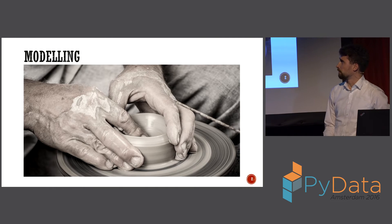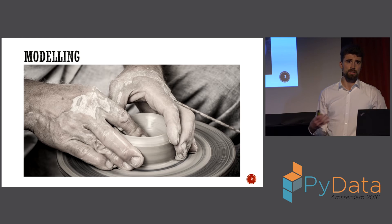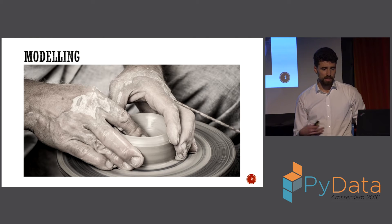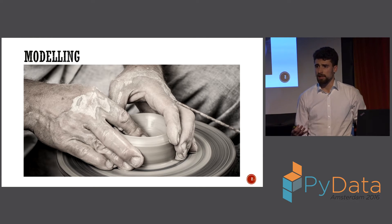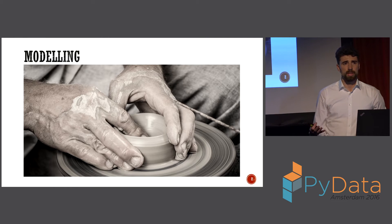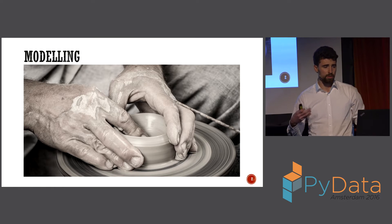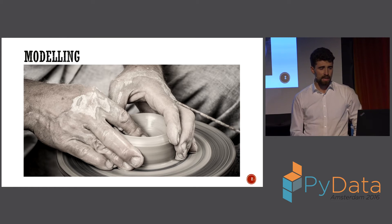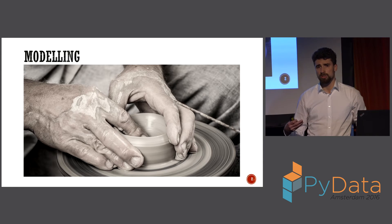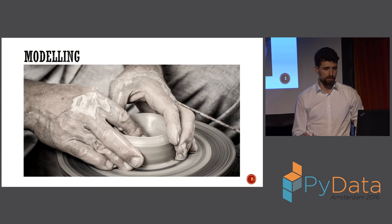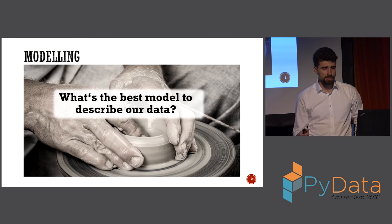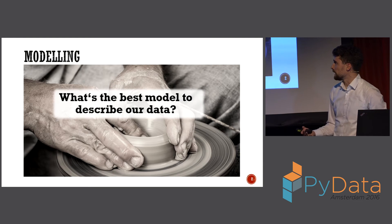A huge part of the work of a data scientist is actually modeling. Some customer, or depending on some project, we get some data, and the data always stands for the observations we have of some complex real-world system or process, and we always want to use the data to find some good model for it. So what we ask ourselves: what's the best model to describe our data?